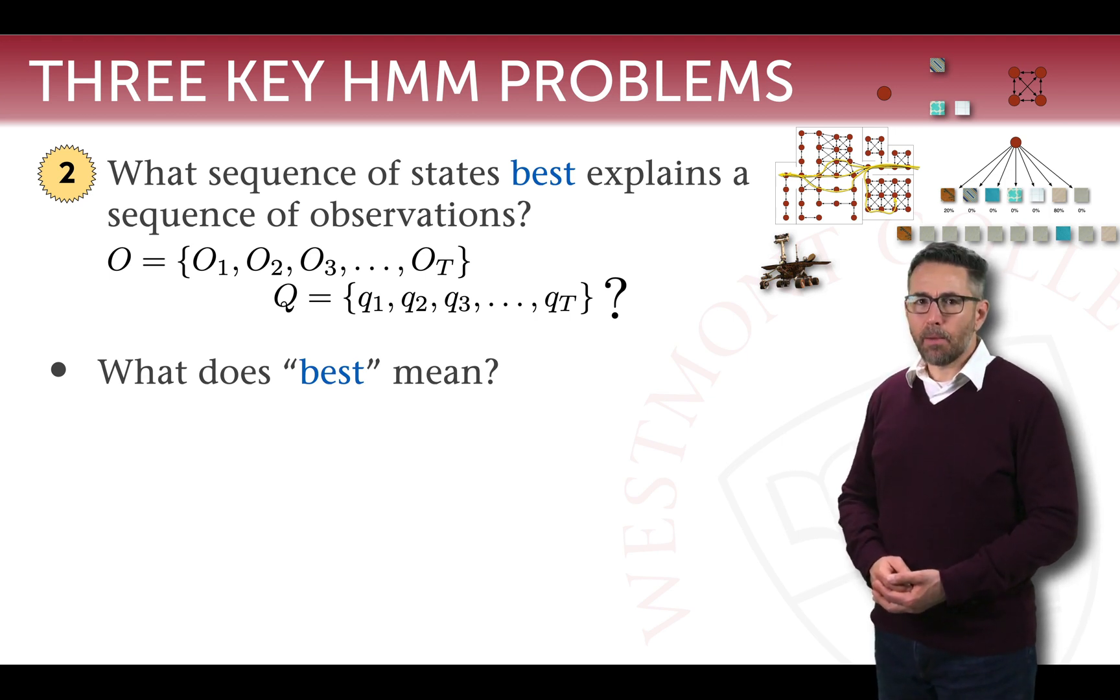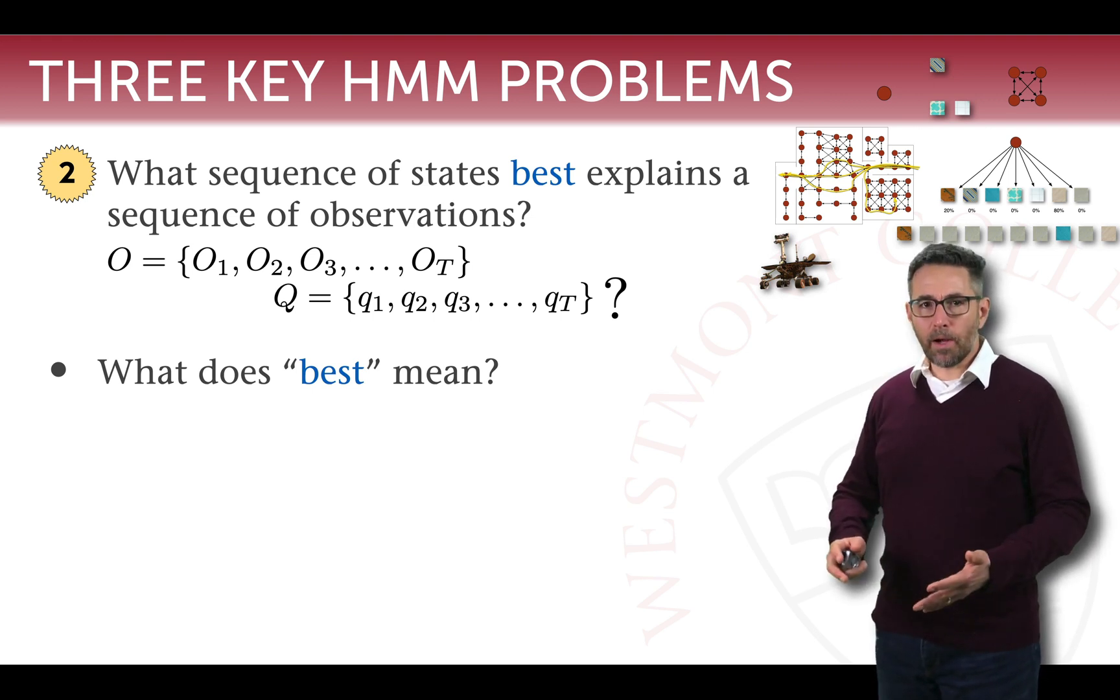The nature of the hidden Markov model is that we're seeing observations that could be generated by many different states, and so when we say best we have to be very clear about what we mean. What I want to do is consider two different versions of what best might mean, having motivated the second of these key problems.